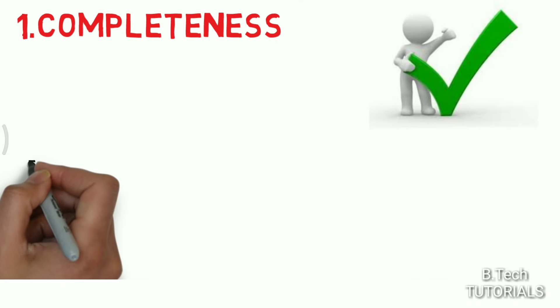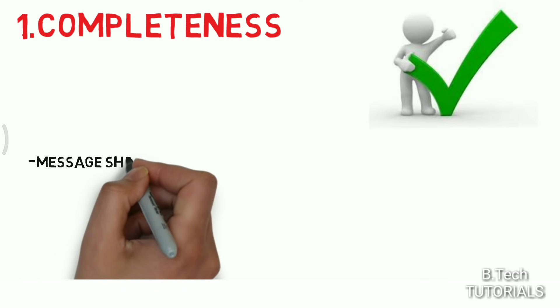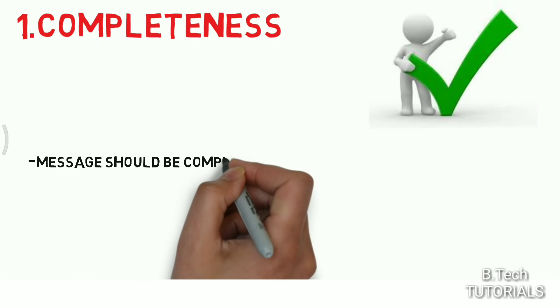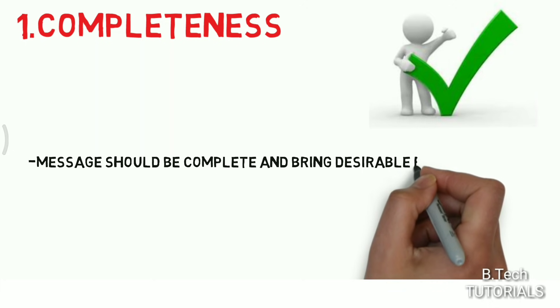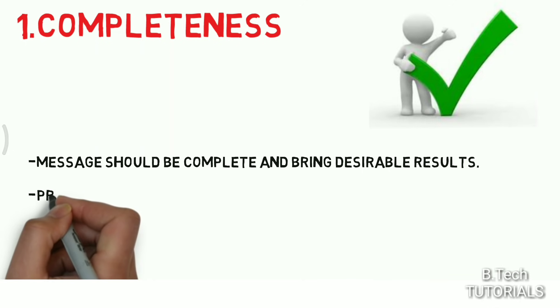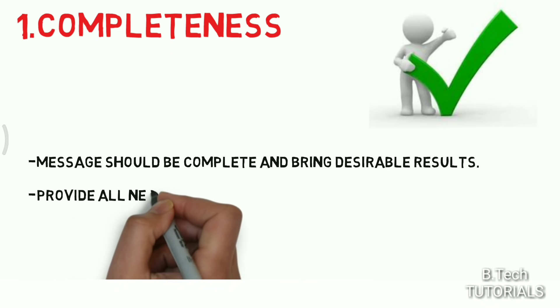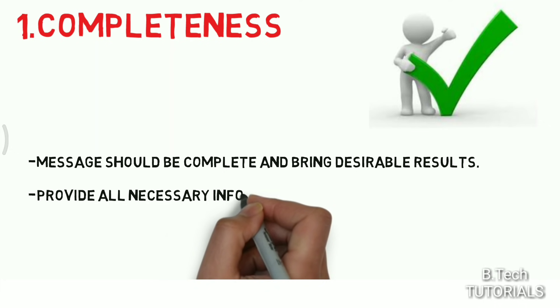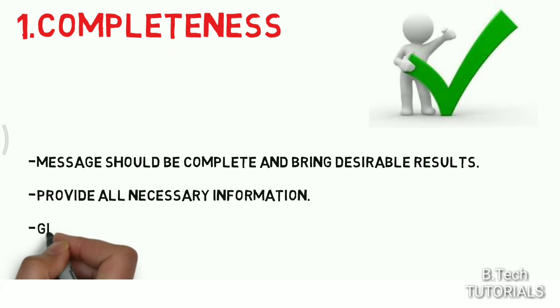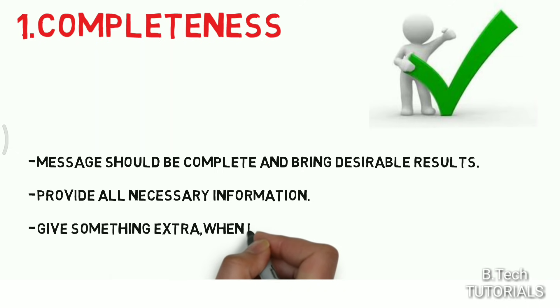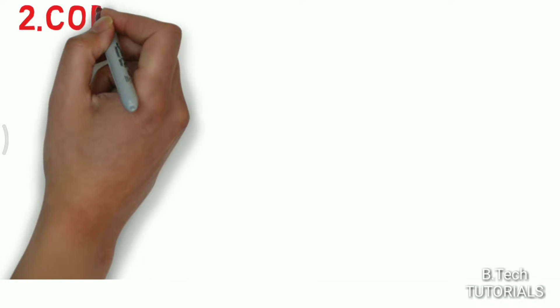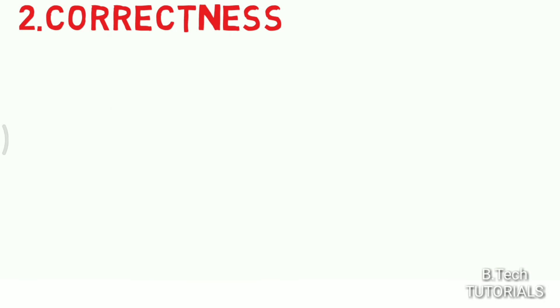First one is completeness. Completeness means our message or what we are writing or speaking should be complete. For that purpose in communication skills, the message should be complete and bring some desirable results. Provide all necessary information, and the most important point is to give something extra when desirable.